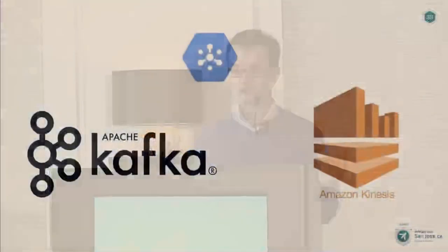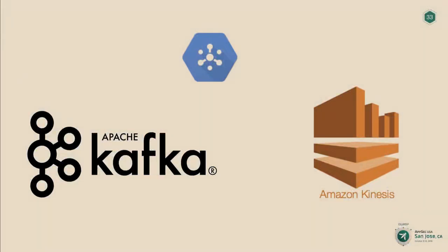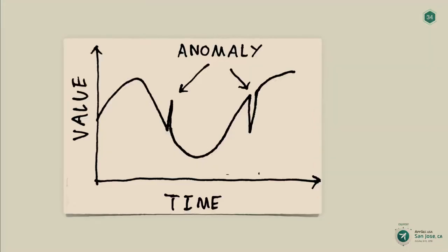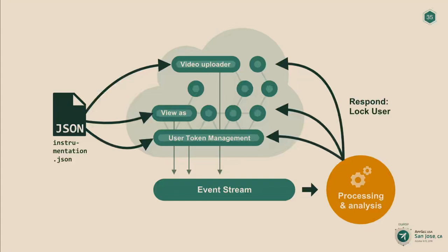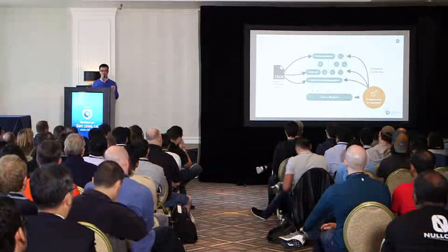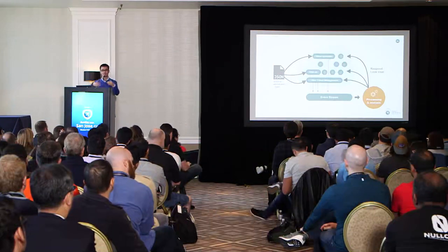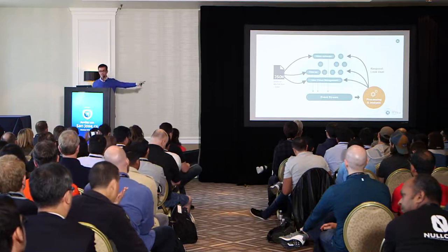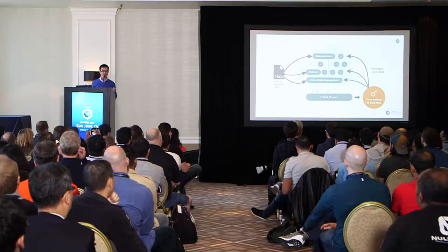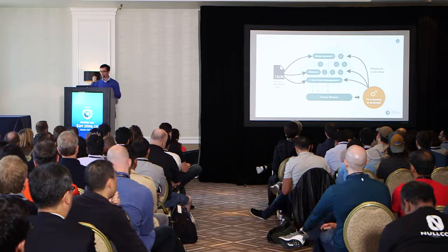To build this at scale, you need data streaming engines — Kafka, Kinesis, Google GCP — these are becoming mainstream. Then you need anomaly detection, which can range from simple rules to advanced AI algorithms; most streaming engines let you plug in such systems easily. Summing up the Facebook use case: an instrumentation file managed by the AppSec team describes the functions to instrument. All company applications retrieve these directives. At runtime, each time a user request triggers one of those actions, the app streams data to the event stream. The security business logic runs in the processing and analysis engine, and if something bad is detected, it responds and locks the user out.